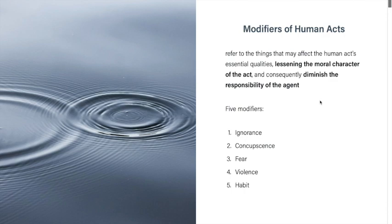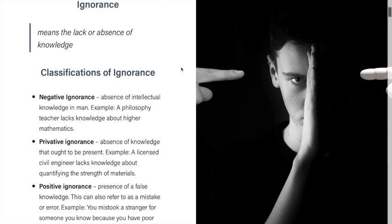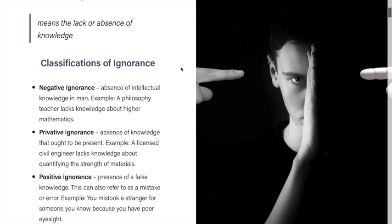First is ignorance. Generally, ignorance means the lack or absence of knowledge — it is the privation of knowledge. Ignorance only has a kind of accidental existence, meaning it does not exist in itself; it only exists when knowledge does not exist. The first classification is negative ignorance: the absence of intellectual knowledge in a person. For example, a philosophy teacher lacks knowledge about higher mathematics.